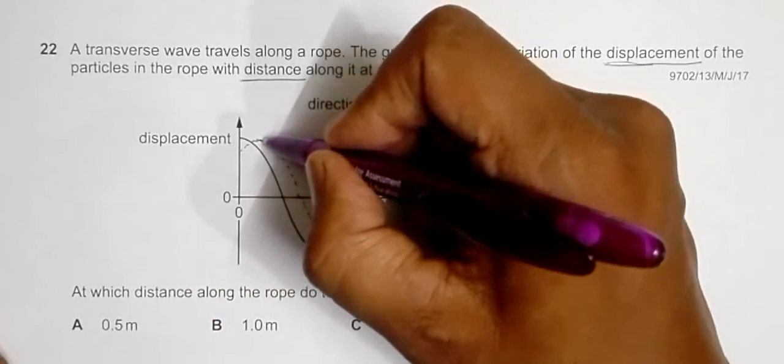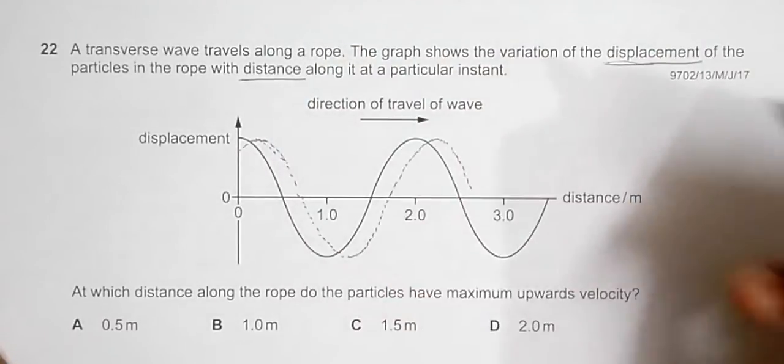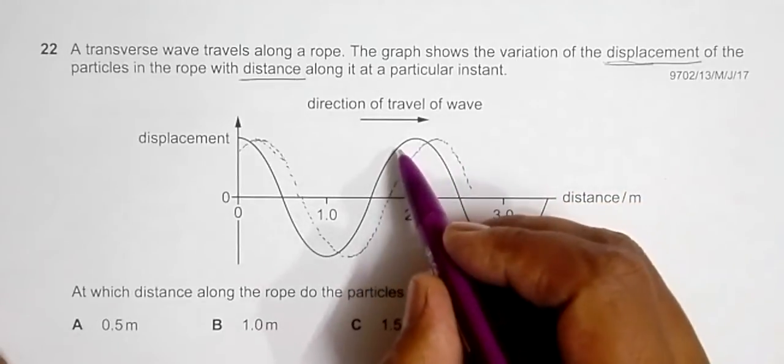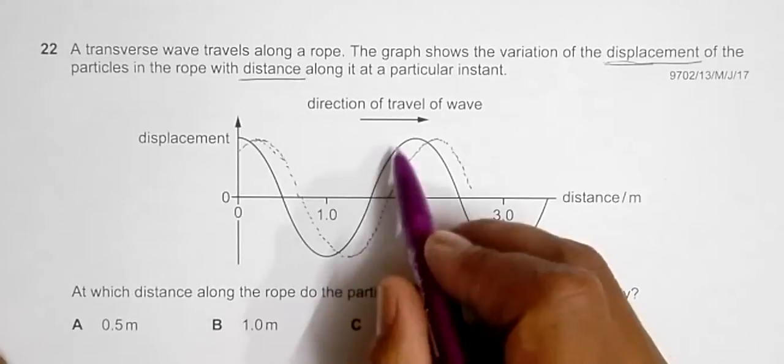And also we have to realize that the particles here perform only vertical motion, so they oscillate like this, and when they oscillate they give their momentum to the neighboring particle.